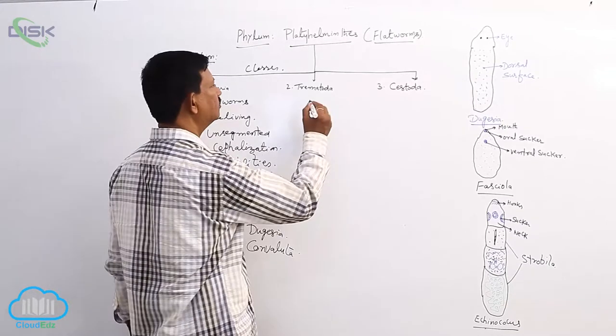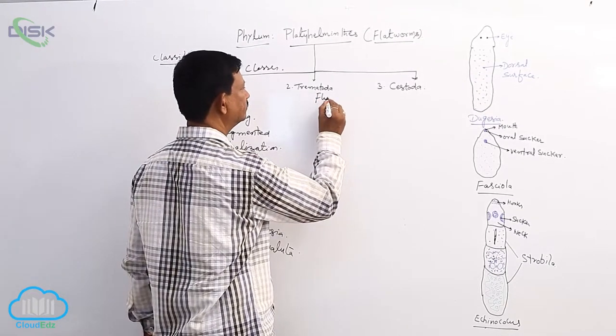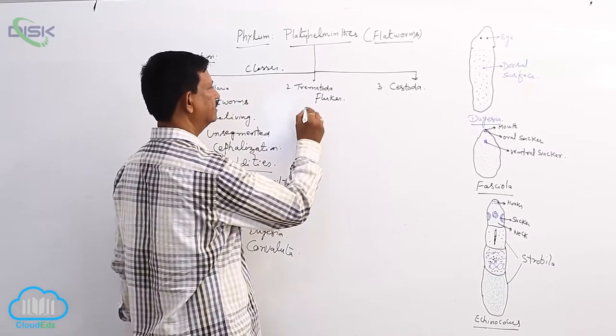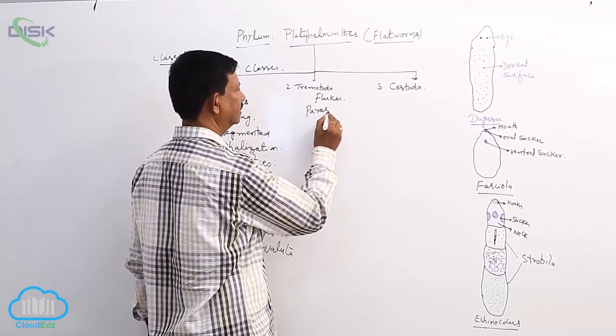Trematoda, these are commonly known as the flukes. They are mostly parasites, they are parasitic animals.